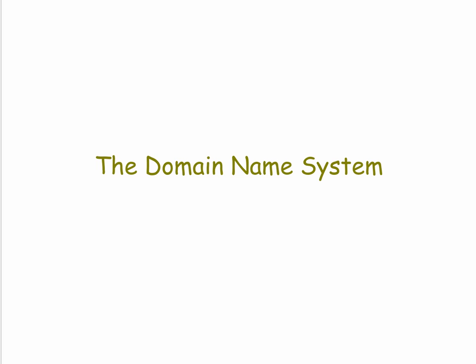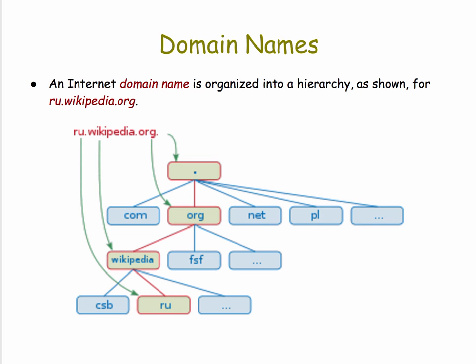Now let's talk about the domain name system. Domain names are organized into a hierarchy, as shown in this example. This is a site for the Russian version of Wikipedia. As you can see, it's a hierarchical system. The root is simply the dot. The highest level of the hierarchy are names like org, edu, and com. At the next level you have Wikipedia, and below that you have RU.